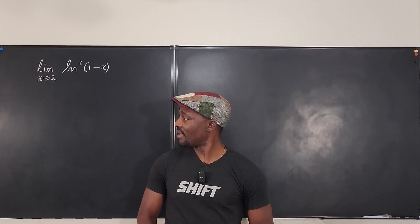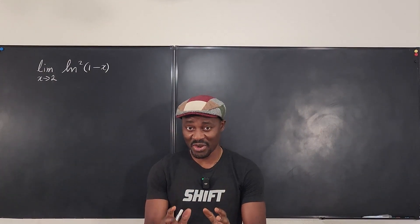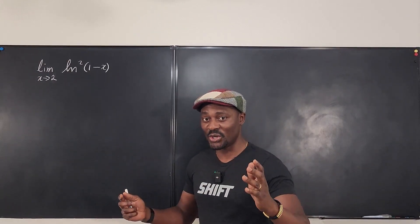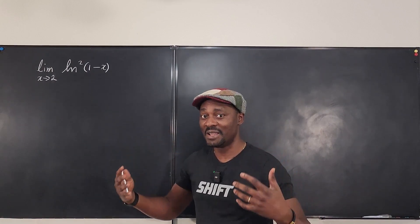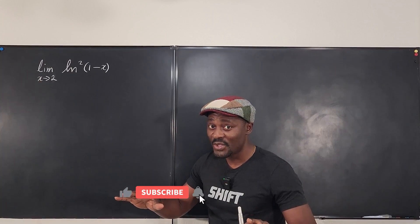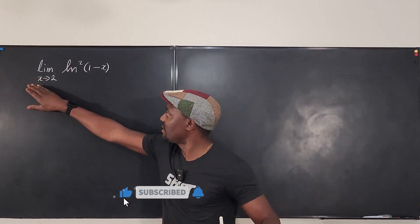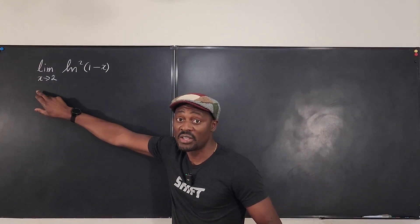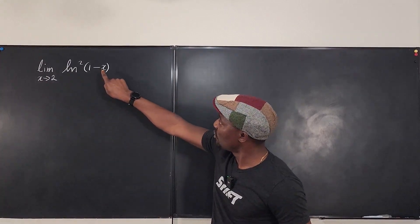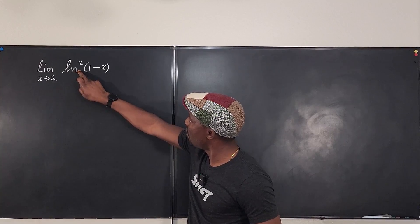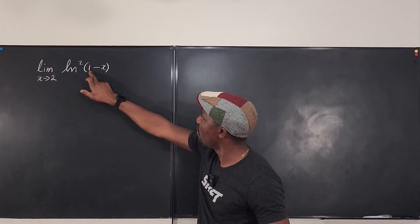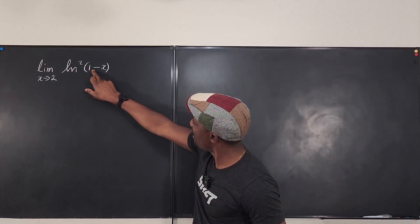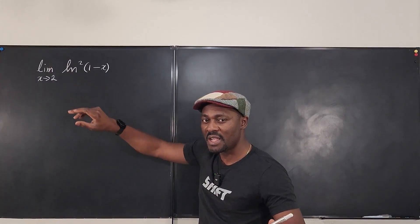Welcome to another video. We have another limit problem, but this one is a little strange compared to everything we've done before. I chose it to show you all the possibilities of taking a limit. You can clearly see that x approaches 2, and the first move is to plug in the number as long as it's finite. Plugging in 2 gives the natural log of 1 minus x squared, which becomes the natural log of negative 1. Negative 1 is not in the domain of natural log.